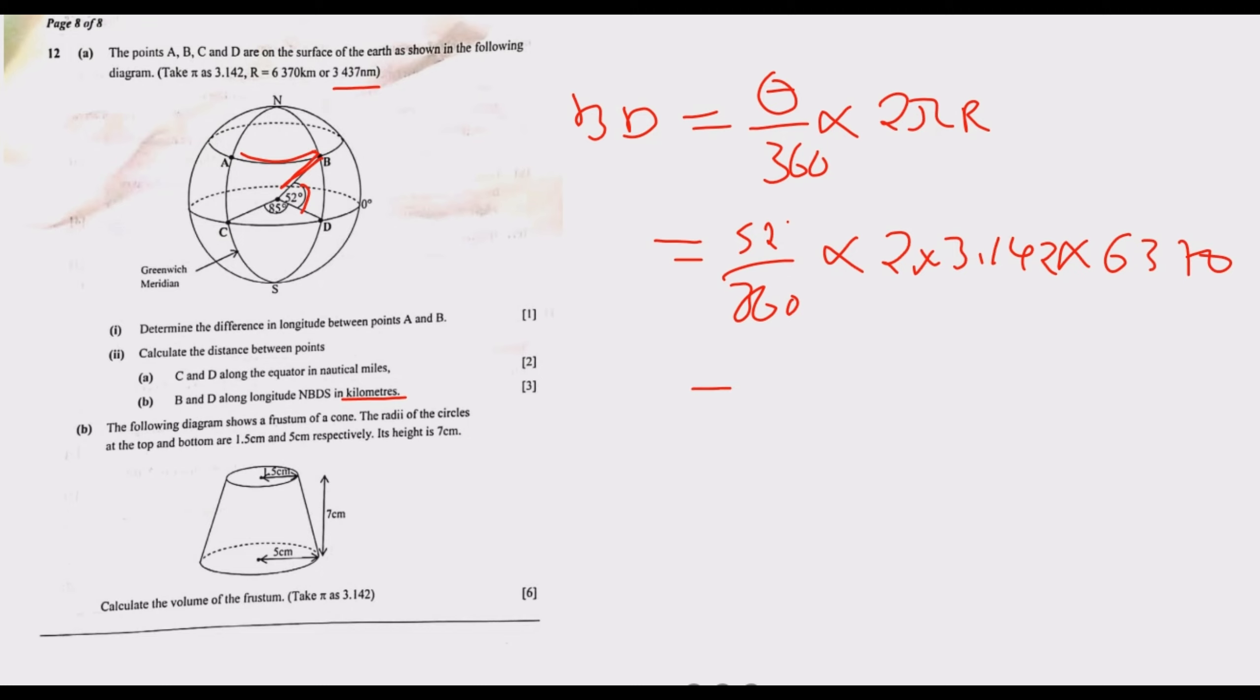We have 52 degrees over 360, then multiply by 2, then multiply by 3.142, then multiply by the radius in kilometers, which is 6,370. Once we multiply, we end up with 5,781.978. To three significant figures, this becomes 5,780 kilometers. This is how you answer this one to get the three marks.